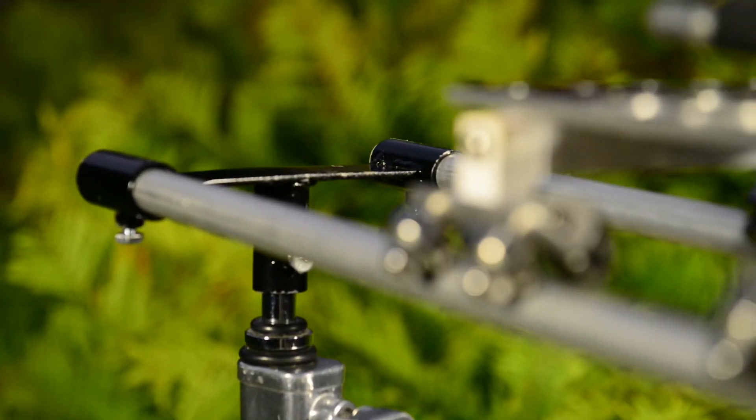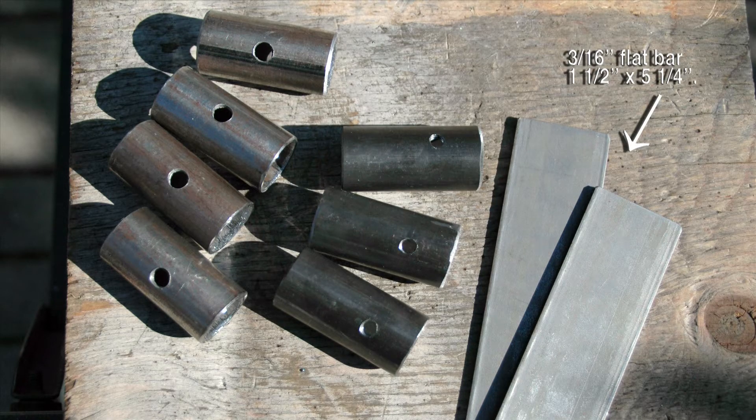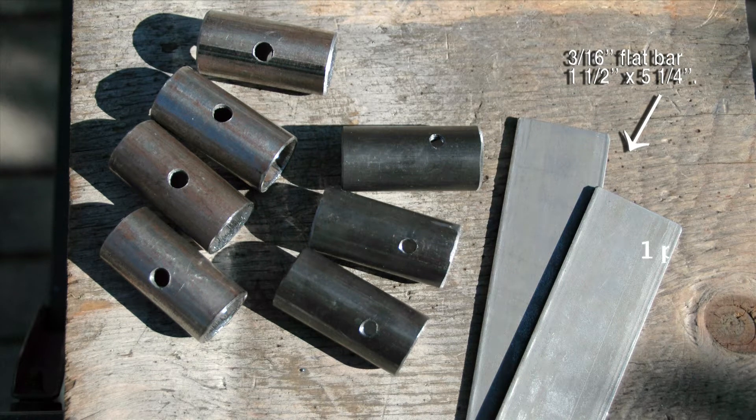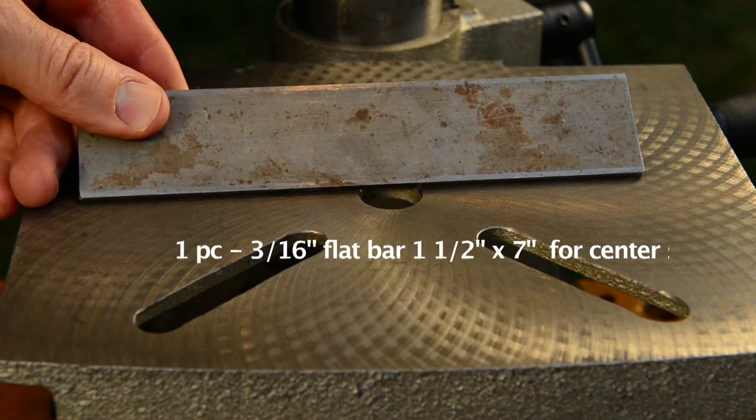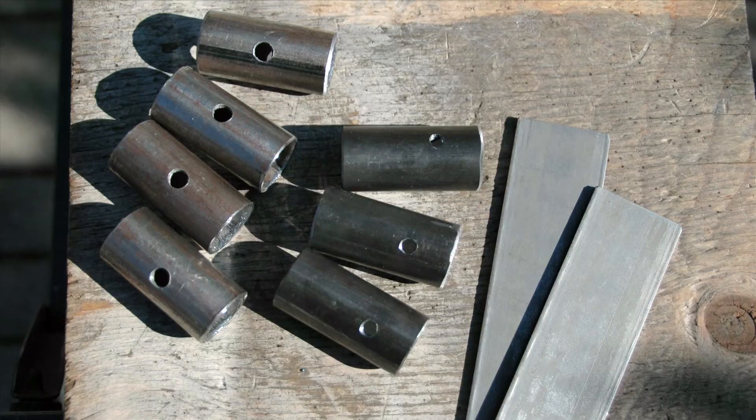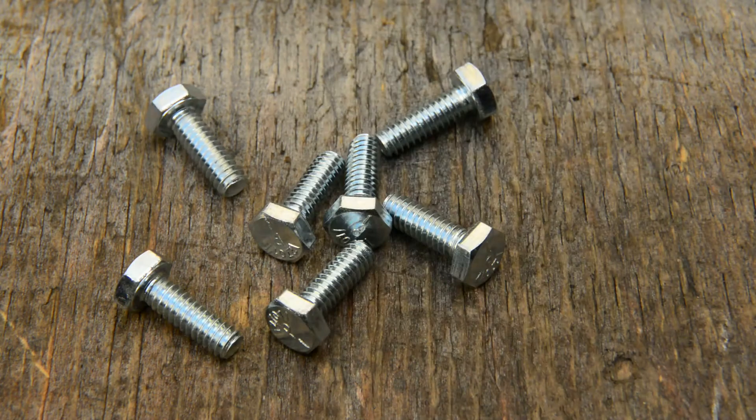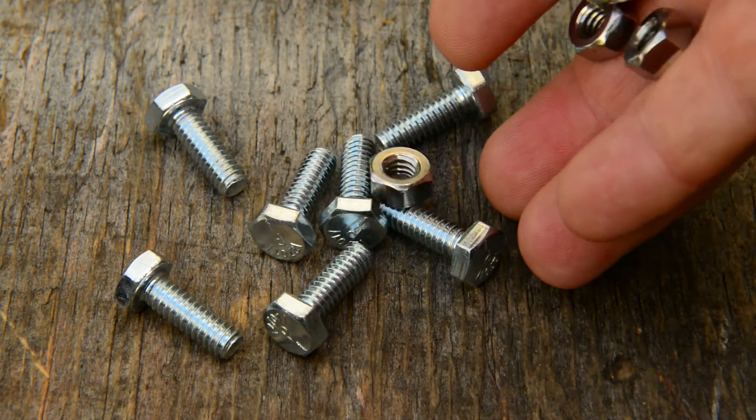Here are the materials for the slider rail brackets. Two pieces of 3/16 inch flat bar, one and a half inches wide and five and a quarter inches long. One piece of 3/16 inch flat bar, one and a half inches wide and seven inches long. Seven pieces of one inch steel tubing, seven quarter 20 bolts and four quarter 20 nuts.